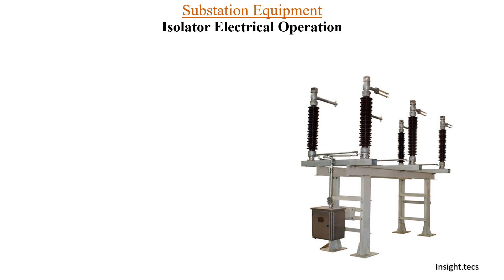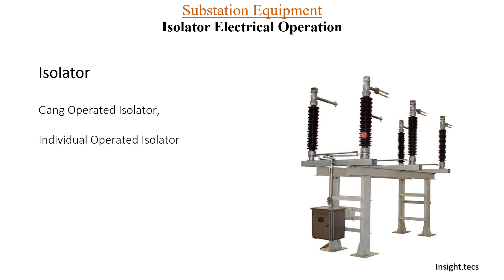This is how isolators generally look. Based on different voltage classes the size of the isolator will differ. Isolators are basically gang operated, meaning all three phases of the isolator will be operated simultaneously. You can see R phase, Y phase, and B phase — gang operation means all three phases are operated together.